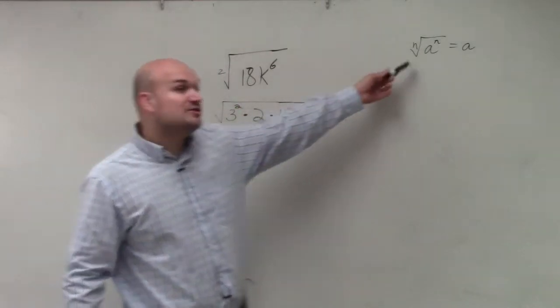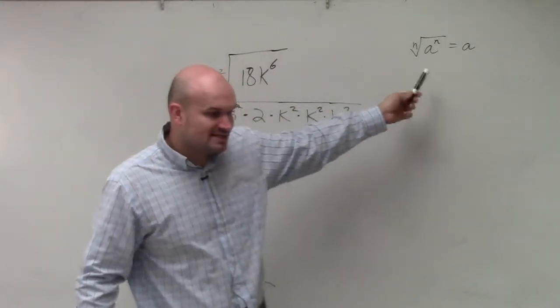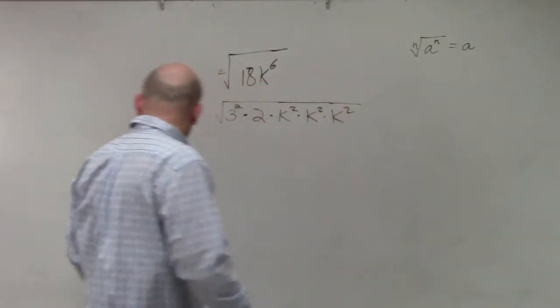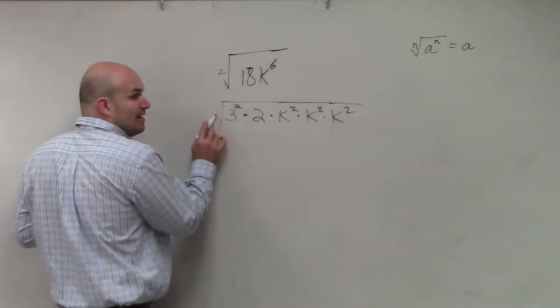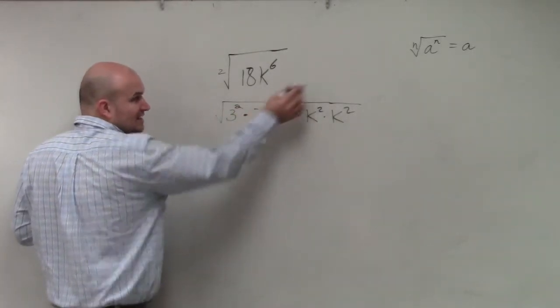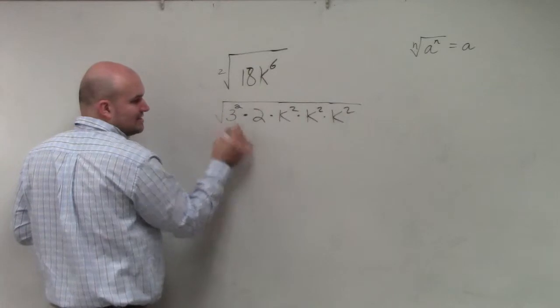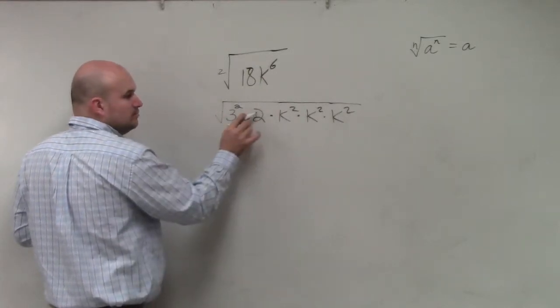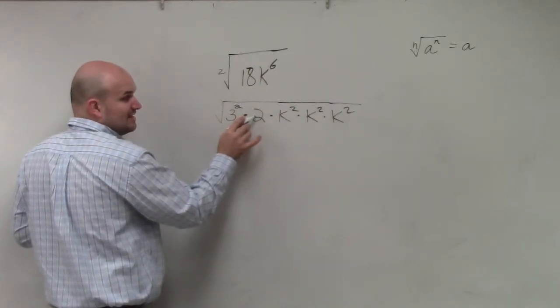Then, using my identity rule, what it states is when you take the square root of a number squared, you just get that number a, or in this case, it would be 3. 2 is not squared, so I have to leave that under the radical.